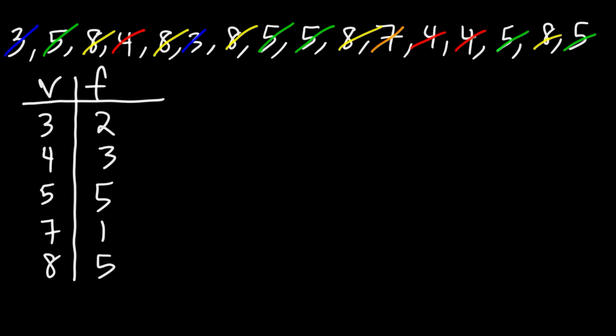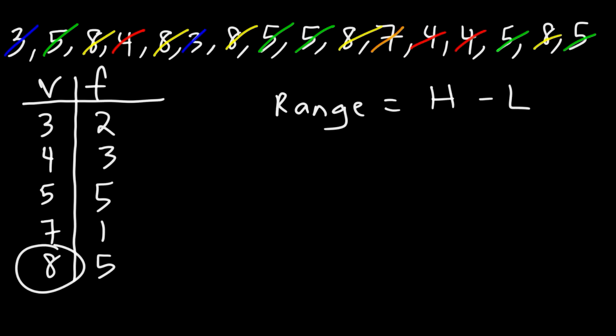Now how can we use this table to calculate the mean, the median, the mode, and the range? Let's start with the range. The range is the difference between the highest number and the lowest number. We can see that the number with the highest value is 8 and the lowest value is 3, so the range is going to be 8 minus 3.